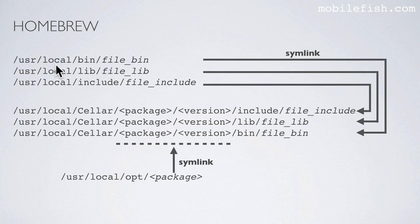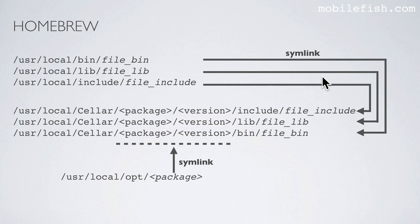Symlinks are created in these three paths, but only if it is needed. For example, if there is an executable, a symlink is created. If there are include files, this symlink is created. If there are library files, this symlink is created. And in /usr/local/opt, a symlink is created.